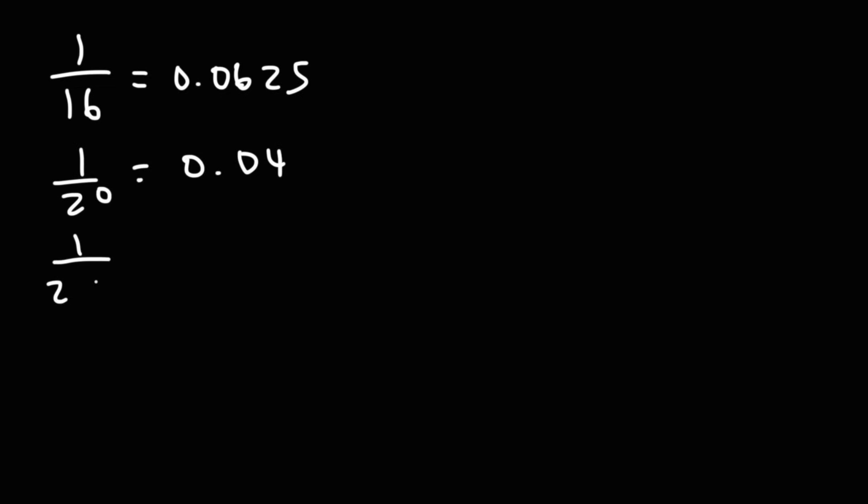1 over 25 is 0.04. 1 over 25 is 0.04 because 20 times 5 is 100. Notice the pattern. 1 over 50 is 0.02 because 50 times 2 is 100. And 1 over 100 is 0.01 because 100 times 1 is 100. That's the way you can see it.